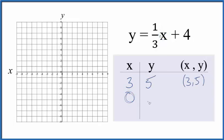I always like 0. 1/3 times 0, that's 0 plus 4, that's just 4. And then how about negative 3? 1/3 times negative 3, that's negative 1, plus 4, that's 3.